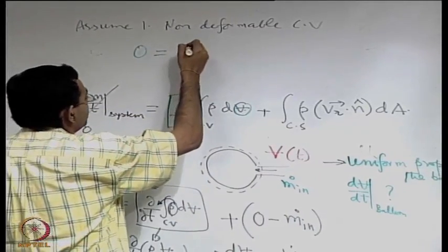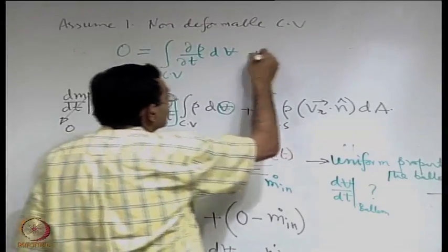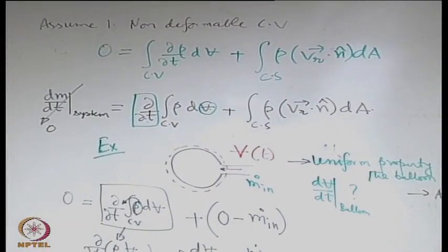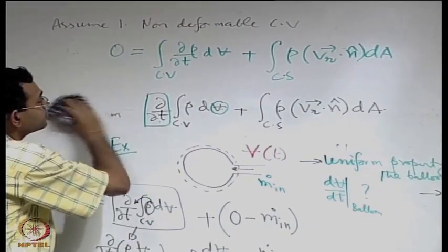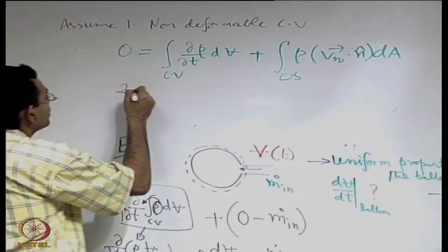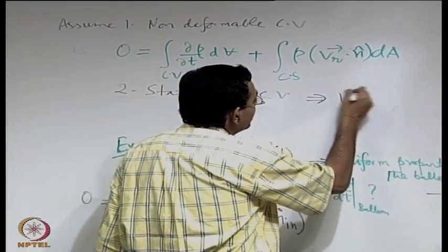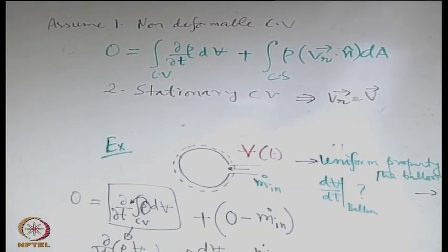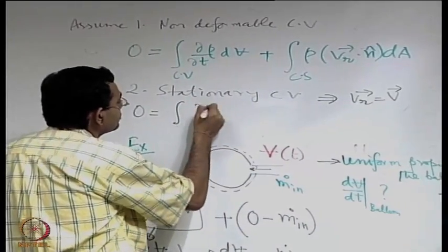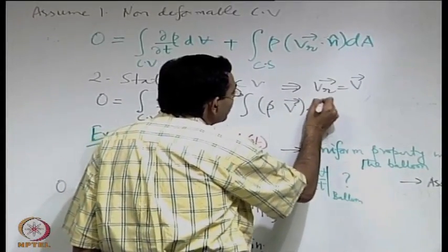Next, we will make another assumption: the control volume is stationary or fixed. If you have a stationary control volume, then V_relative is equal to V — the relative and absolute velocity are the same if the control volume is not moving. So the equation becomes 0 = integral of ∂ρ/∂t dV plus integral of ρ v·n dA.